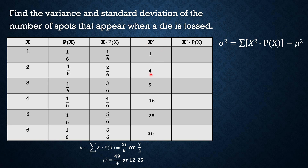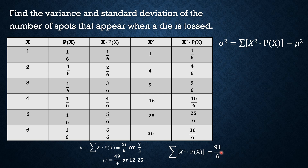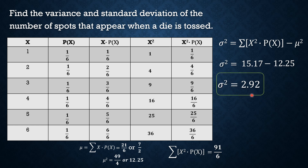Now we multiply x squared by the probability P(x): 1×(1/6), 4×(1/6), 9×(1/6), 16×(1/6), 25×(1/6), 36×(1/6). By adding all these values to get the summation part of our formula, we get 91/6. Now let's substitute these values into our formula for the variance. Sigma squared equals 91/6, which is approximately 15.17, minus mu squared of 12.25, and so our variance sigma squared equals 2.92.